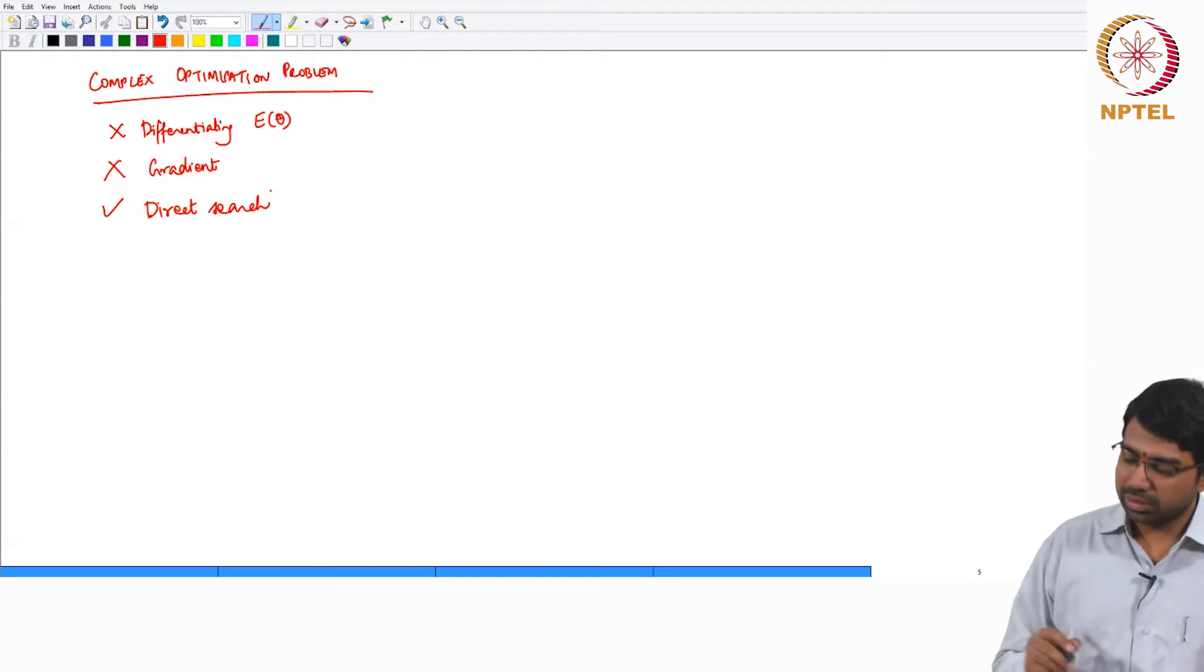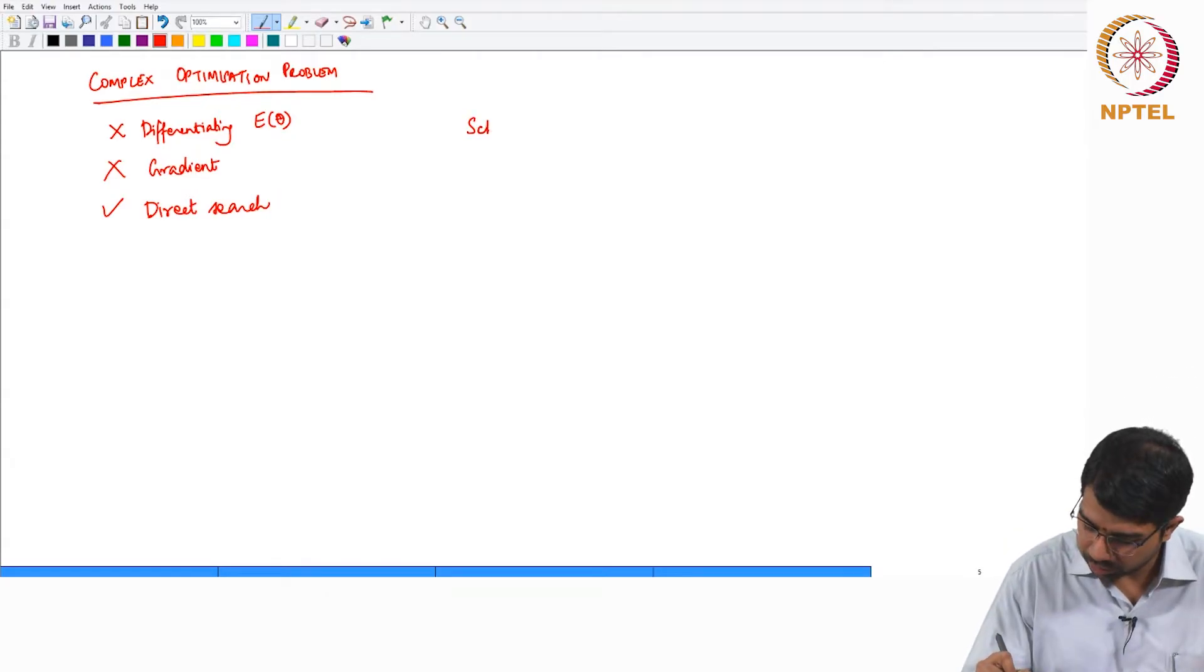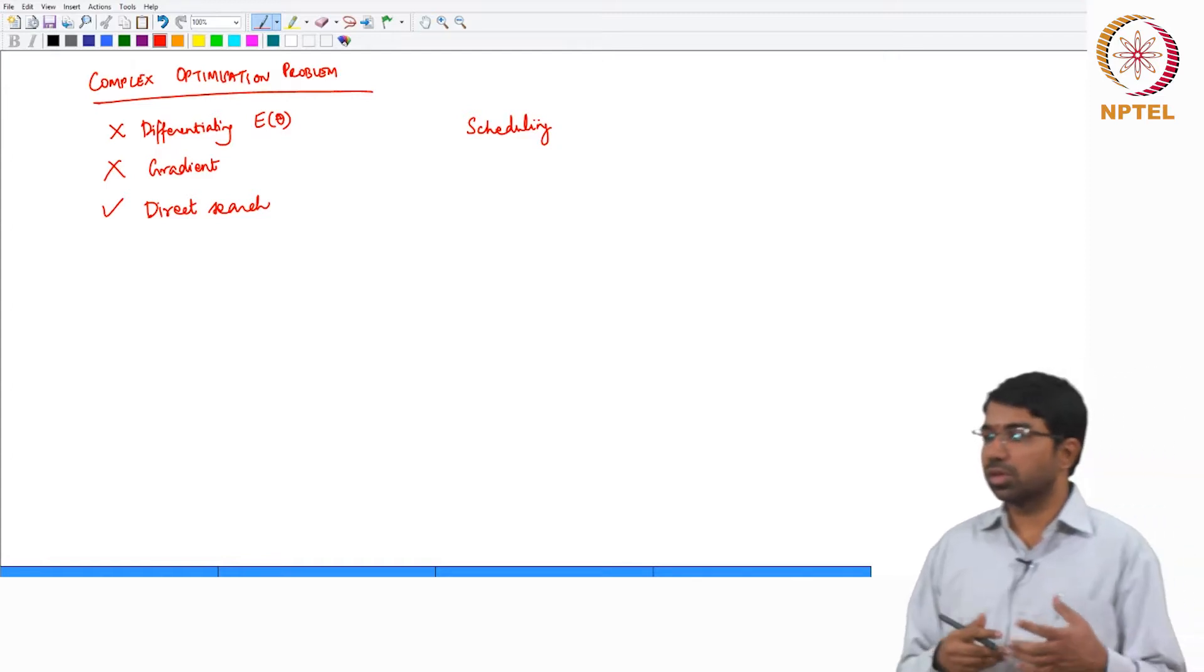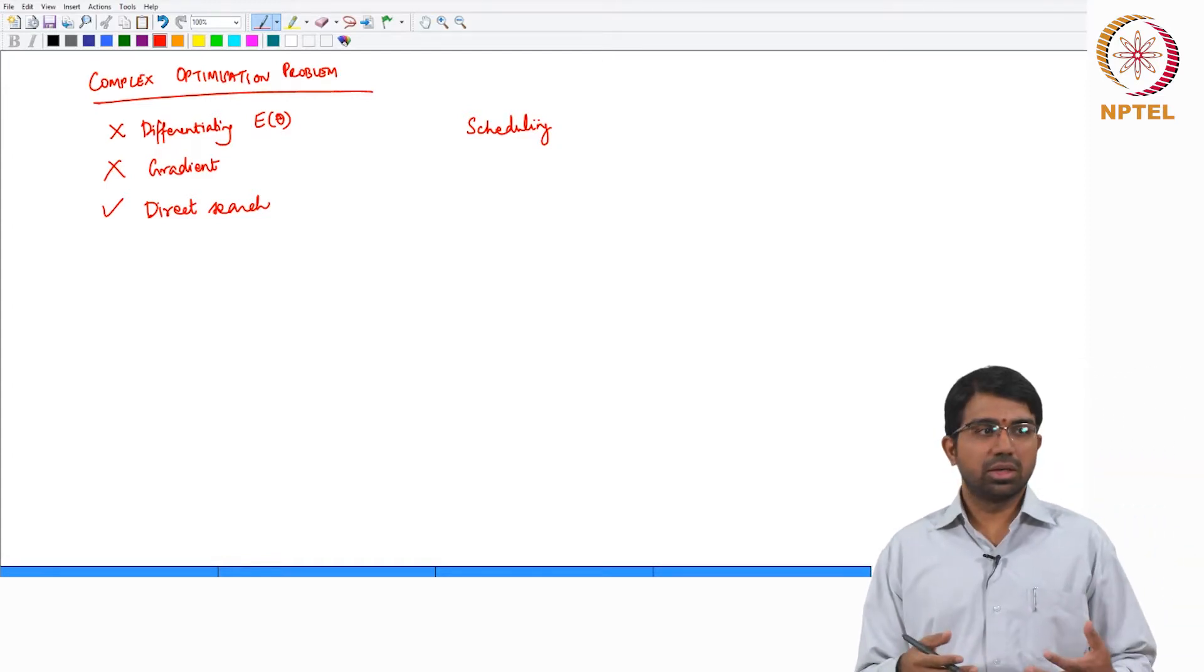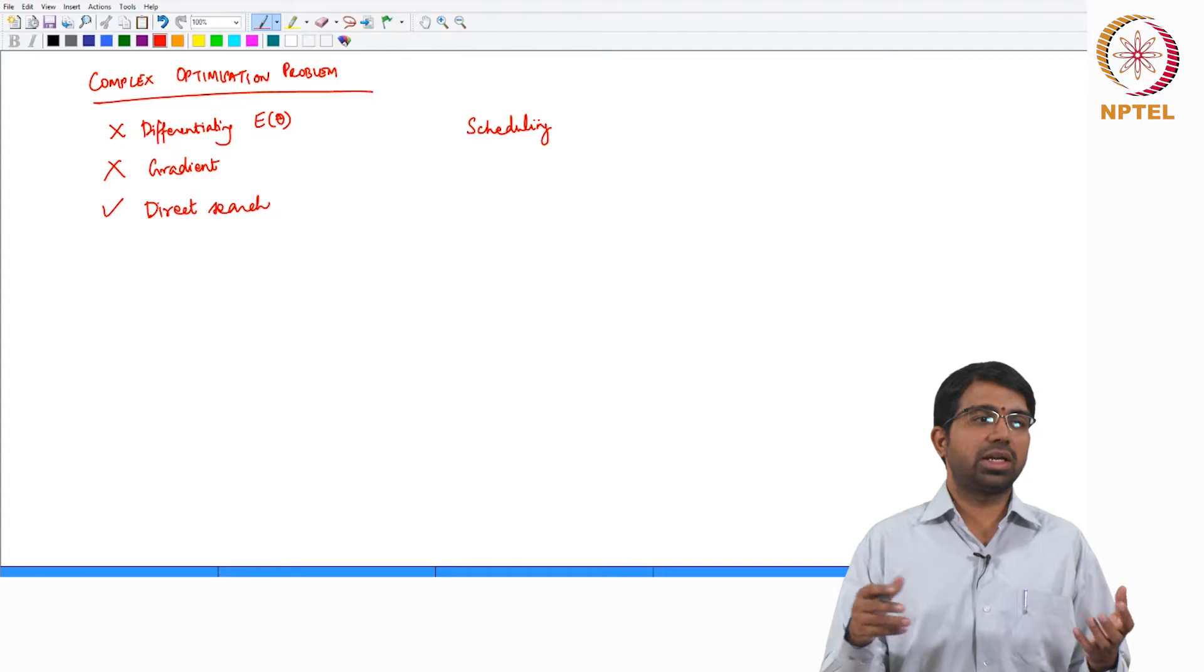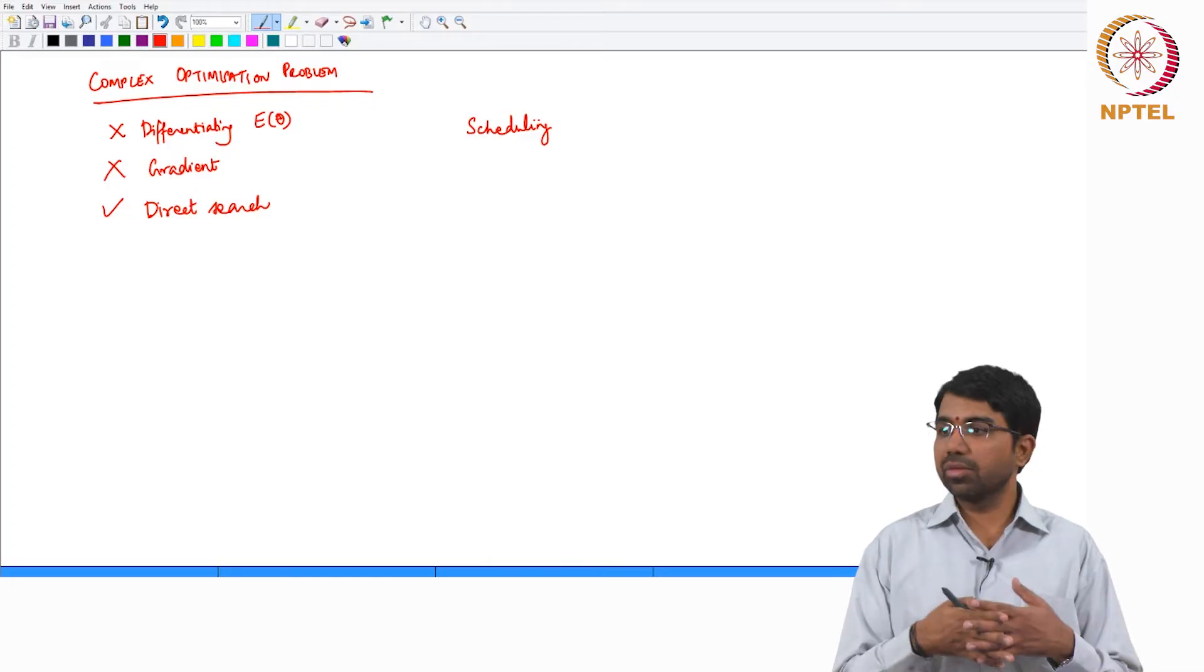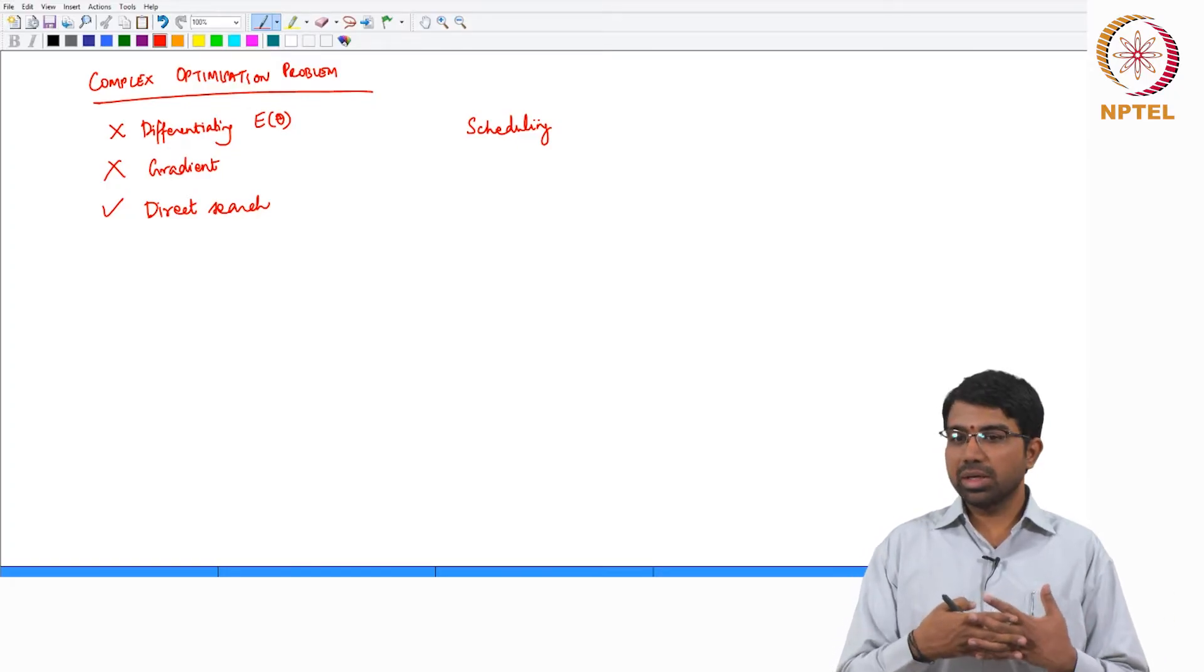One classic example of this sort is scheduling. In fact, there are universities that use genetic algorithms to schedule the final exam timetable. Different students have different courses that they are taking, and how do you make a final exam timetable that does not have too many exams for the same person on the same day or even overlapping exams?